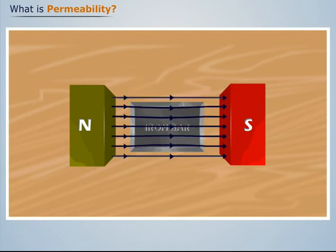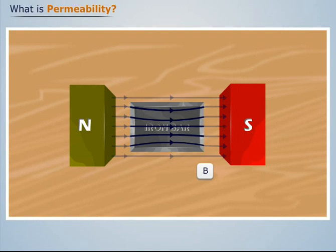We see that a flux density B develops in the iron bar. Thus the iron bar becomes magnetized and develops its own magnetic field. Such ability of a material to become magnetized in the presence of an external magnetic field is called magnetic permeability.